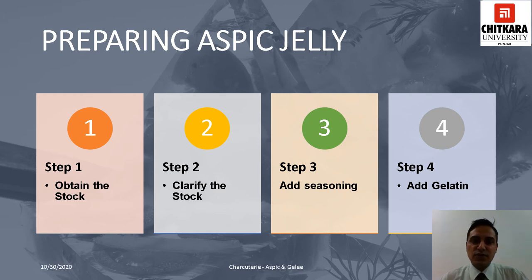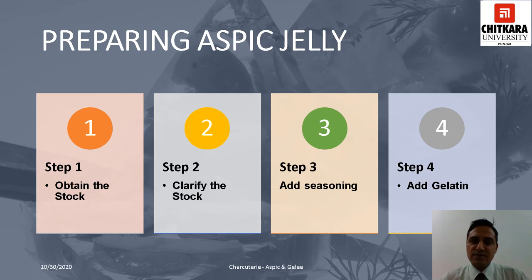Make a hole in the center of the raft to allow the liquid to bubble through. Simmer the liquid gently for 90 minutes without disturbing the raft. Strain the liquid through cheesecloth using a ladle. Let the liquid rest for 15 minutes. Remove any fat from the top by blotting with a paper towel.